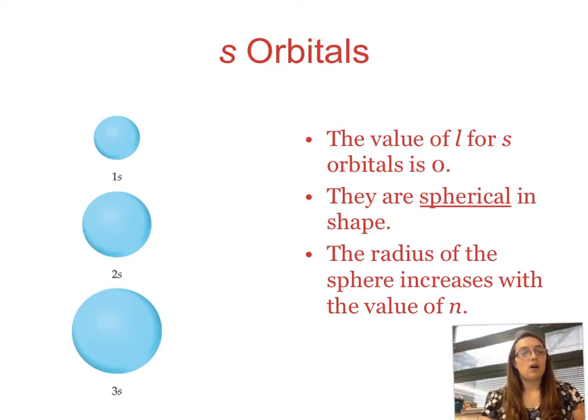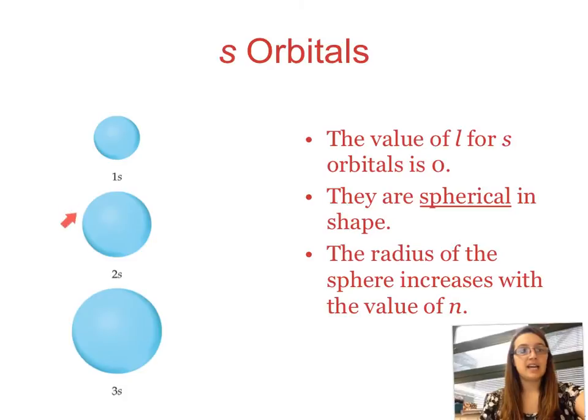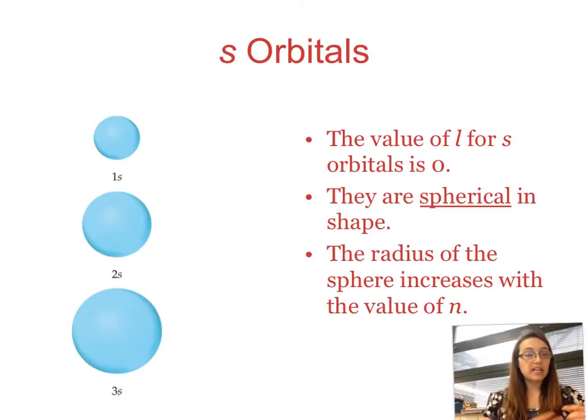So what we're going to look at now are each of the individual orbitals, and we're going to look at the shape and different designations. So with an s orbital, this is the simplest orbital that we can have. The value of l for an s orbital is 0. So if l is 0, you have an s orbital. They are spherical in shape, so you can see three examples here, the 1s, the 2s, and the 3s. And notice that as n gets bigger, the radius of the sphere also gets bigger.